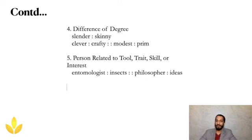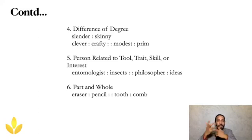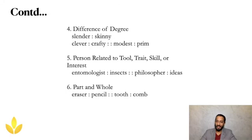Part and whole. Remember the pencils that used to have an eraser tip? If an eraser is part of a pencil, then the blank is part of a comb — and the answer is a tooth. A tooth is part of a comb. This is as simple as it can get for an example.